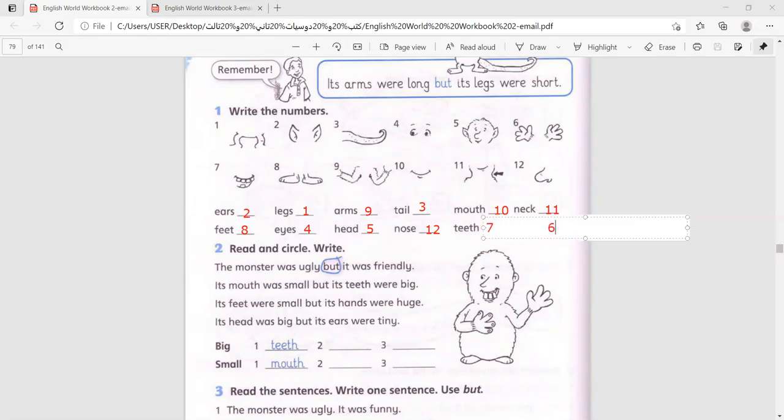This is it. Now read and circle and write. The monster was ugly but it was friendly. Its mouth was small but its teeth were big. Its feet were small but its hands were huge. Its head was big but its ears were tiny.